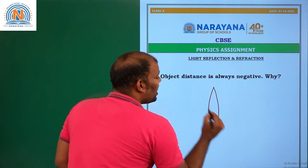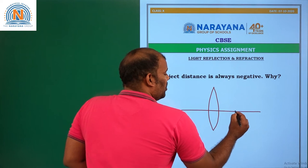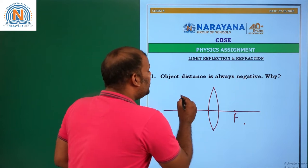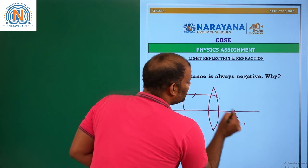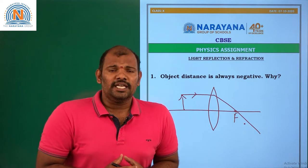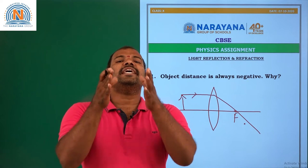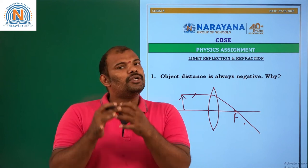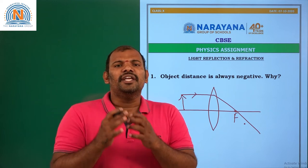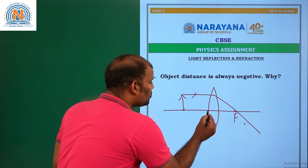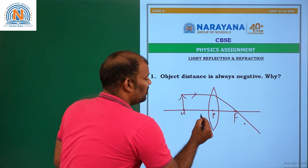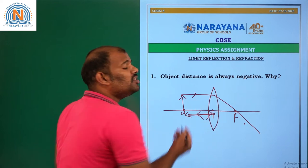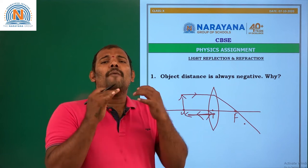Suppose this is a lens and here you have the focus. Here is the object. The second point is: if the distance is measured in the direction of the incident ray, it is considered positive. If the distance is measured opposite to the direction of the incident ray, it is taken as negative. The object distance is measured from pole to object, and you are measuring it opposite to the direction of the incident ray. So that is why object distance is negative.